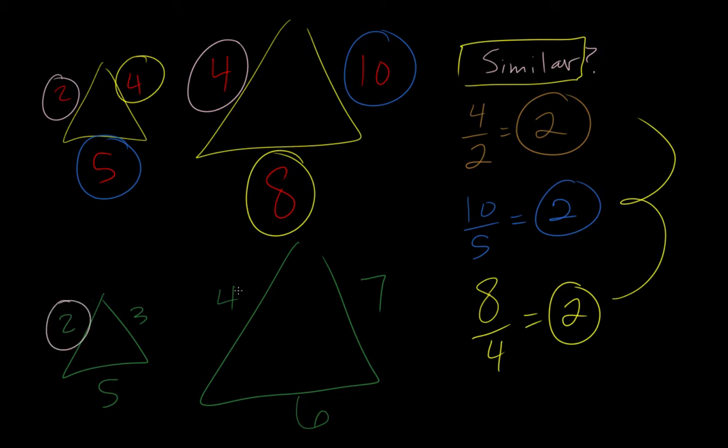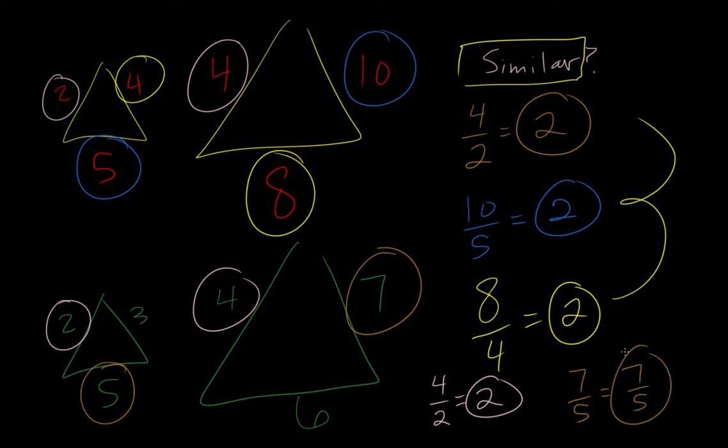Okay, so we look for the smallest, we got a 2 and a 4, so we take 4 divided by 2, that's equal to 2. And now we're going to take the largest, so 5 is the largest over here, 7 is the largest over here, 7 divided by 5 is just 7 fifths. Since 7 fifths and 2 are not the same number, these are not similar.